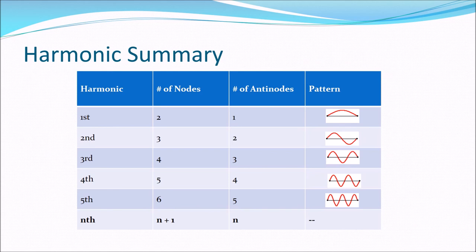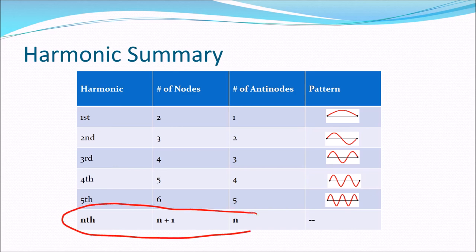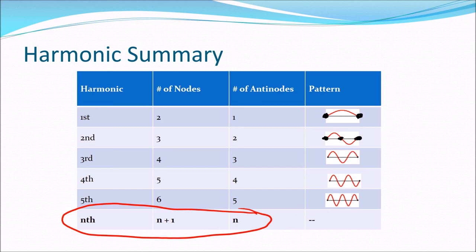Here's a summary of how we find the number of nodes and antinodes: the harmonic number matches how many antinodes and how many loops we have. The number of nodes equals the number of antinodes plus one. For the first harmonic there is one node on each end; for the second harmonic there is one on each side and one extra in the middle.